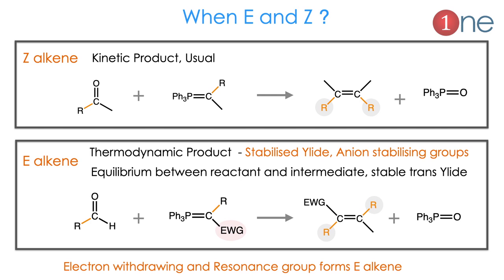When will E and Z form? The Z-alkene is formed when there is a kinetic product, which is the very normal one. Z means both alkyl groups are on the same side. The E-alkene will form when there is a thermodynamically stable product — or in other words, when a stabilized ylide or any anion-stabilizing group is present, it forms the E-alkene. The electron-withdrawing group or anion-stabilizing group attached to the carbon of the ylide gives the E-alkene. Normally Z-alkene will form; if there is any stabilizing species on the ylide carbon, you get the E-alkene.